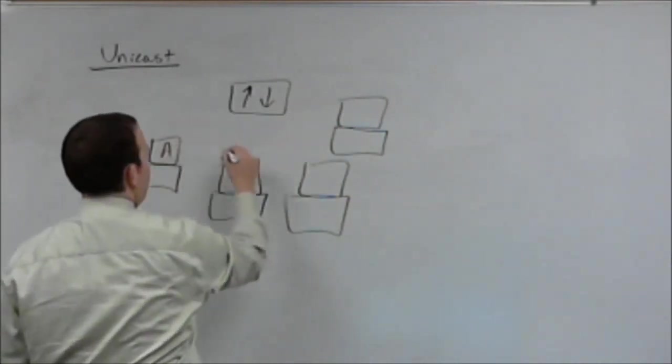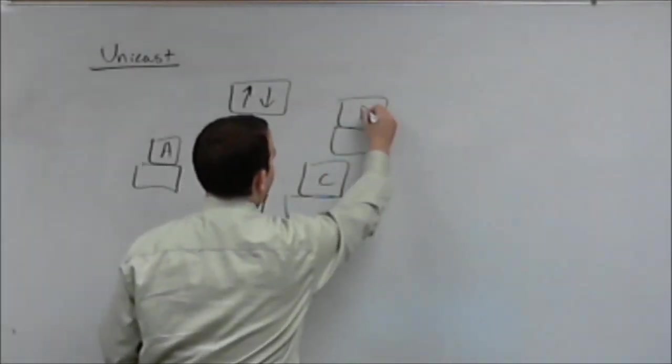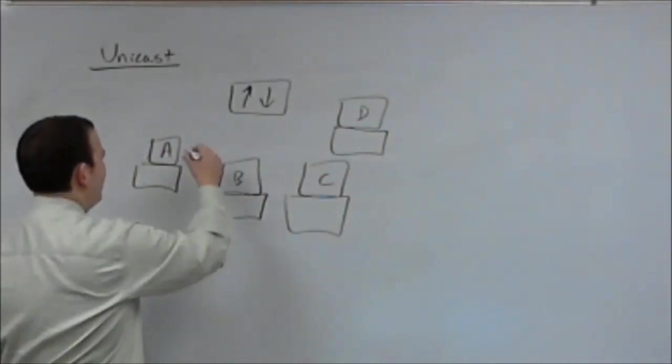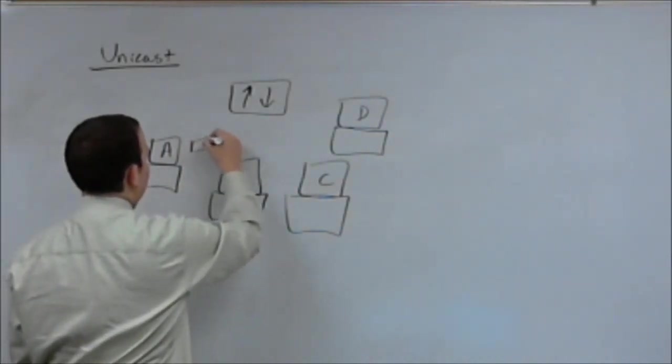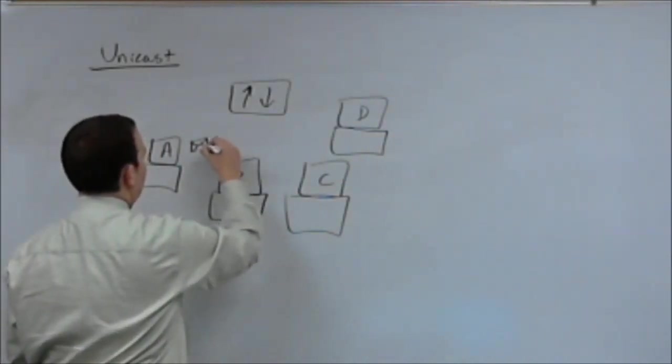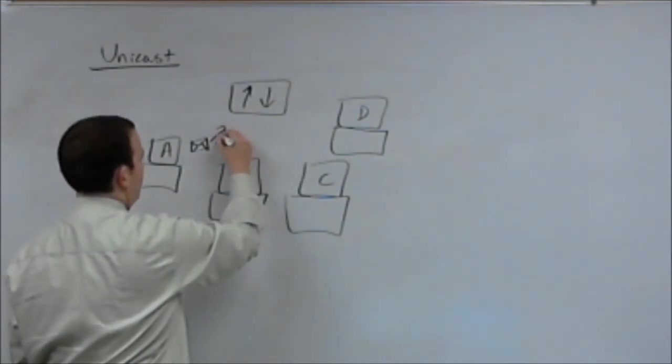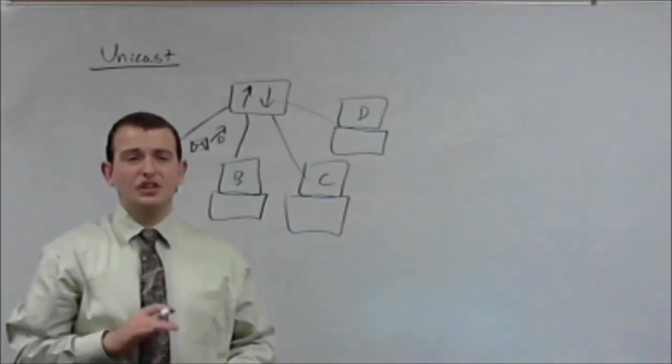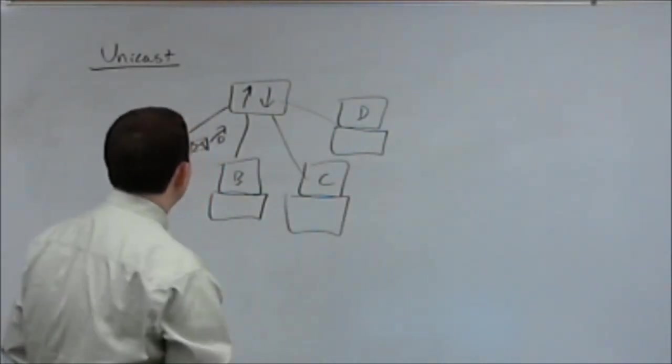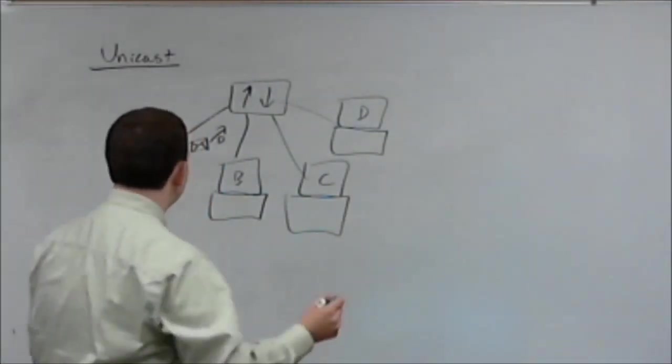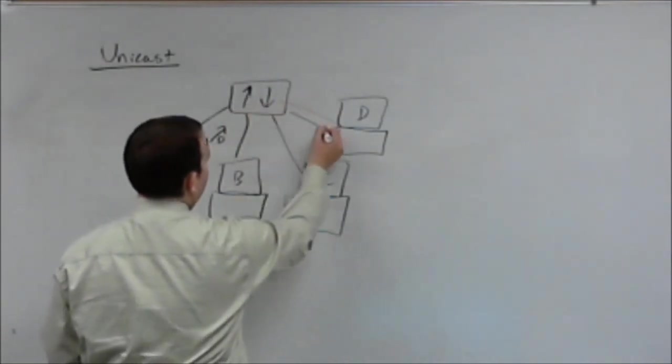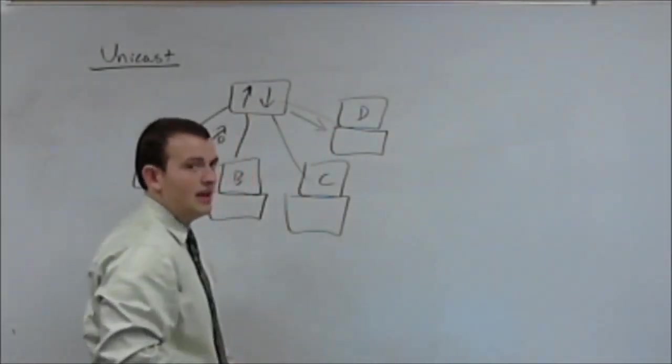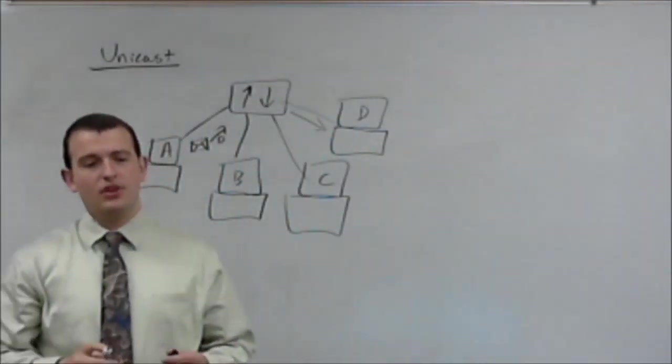We've got host A, host B, host C, and host D. Host A is sending a packet to host D. Now this is a unicast packet because it needs to go to one place. So that packet is going to travel up to the switch and out to host D. That is a prime example of unicast.